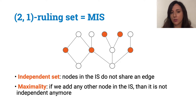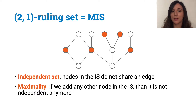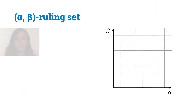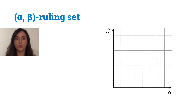The family of ruling set problems includes the classical graph problem that is the maximal independent set problem. Please note that I am talking about maximal independent set and not maximum. Let's see a bit more in detail the role of these parameters alpha and beta in the family of ruling set problems.